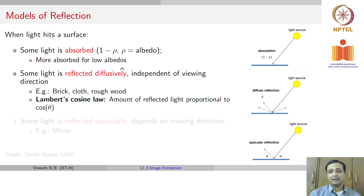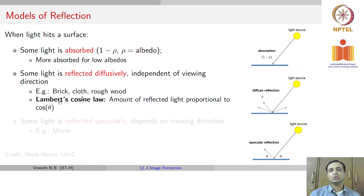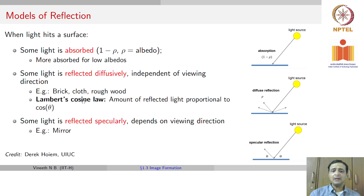Some light is reflected diffusely — it scatters in multiple directions, which happens independent of the viewing angle. Examples of surfaces where light scatters diffusely include brick, cloth, rough wood, or any other textured material. In this scenario, Lambert's cosine law states that the amount of reflected light is proportional to the cosine of the angle from which you are viewing the reflection.